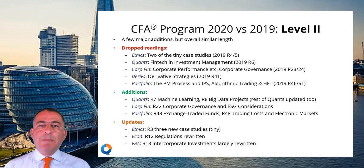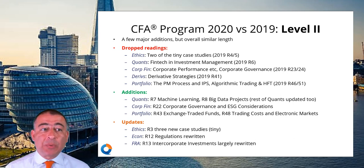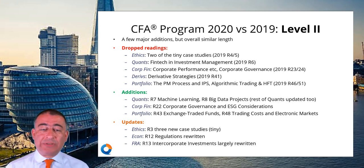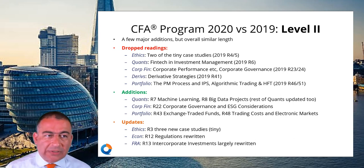Level two has slightly more updates compared to level one. It's a similar length — actually 28 pages more than last year, which is a fraction of one percent. There are five readings that have been dropped.